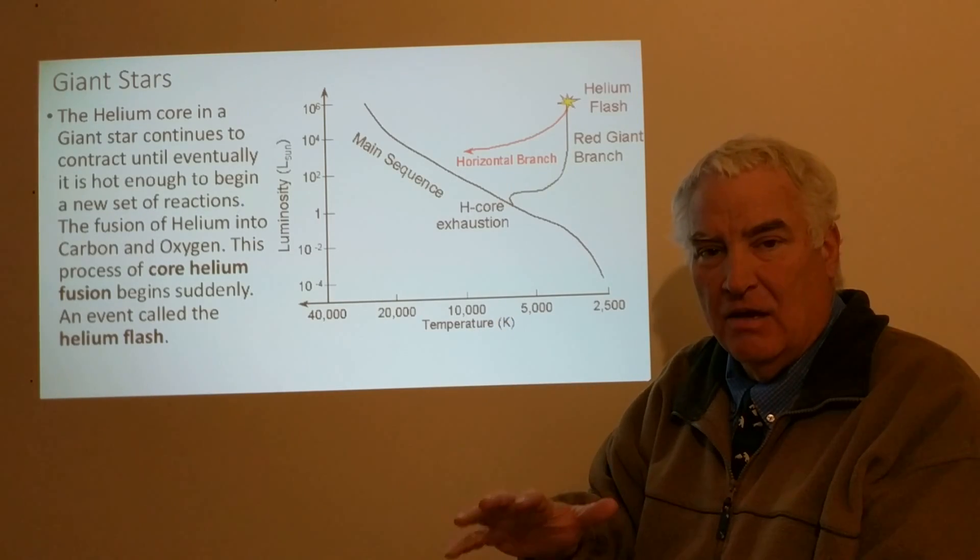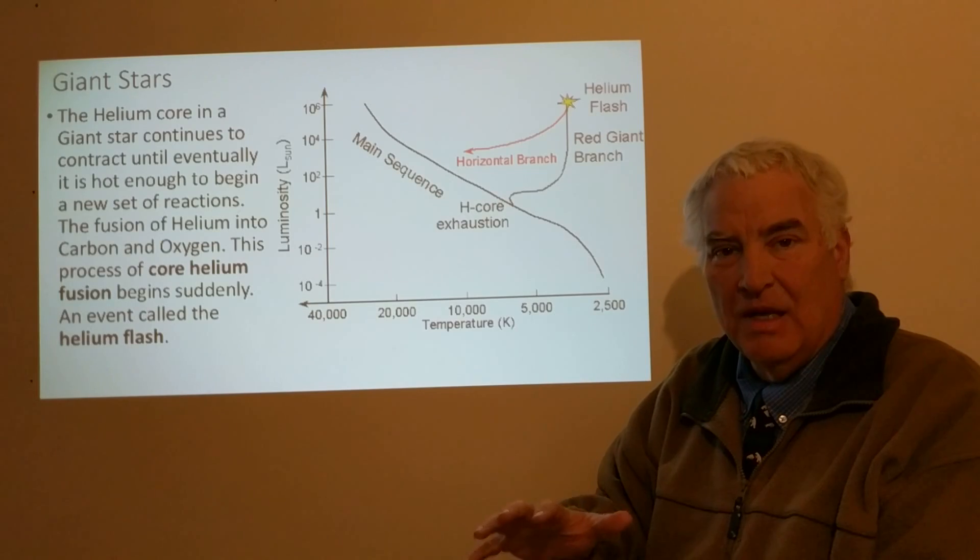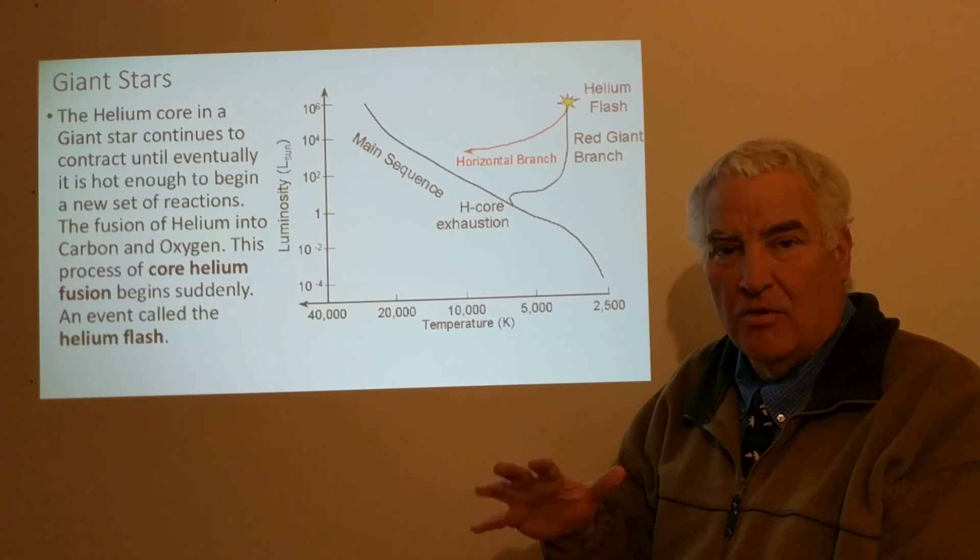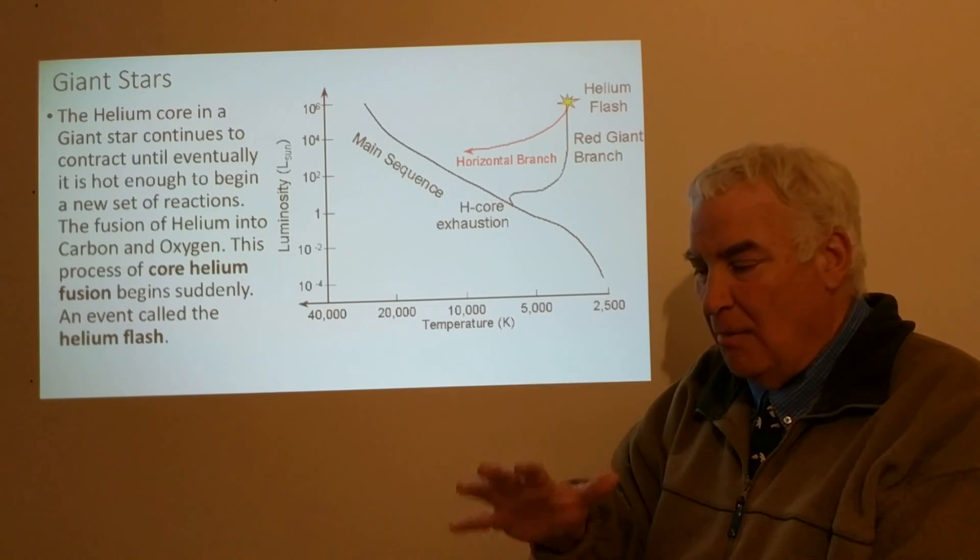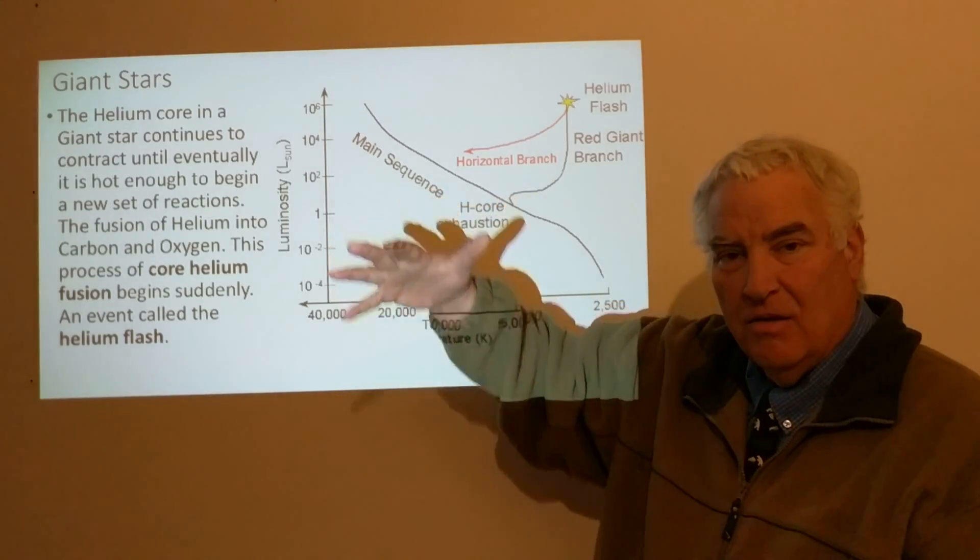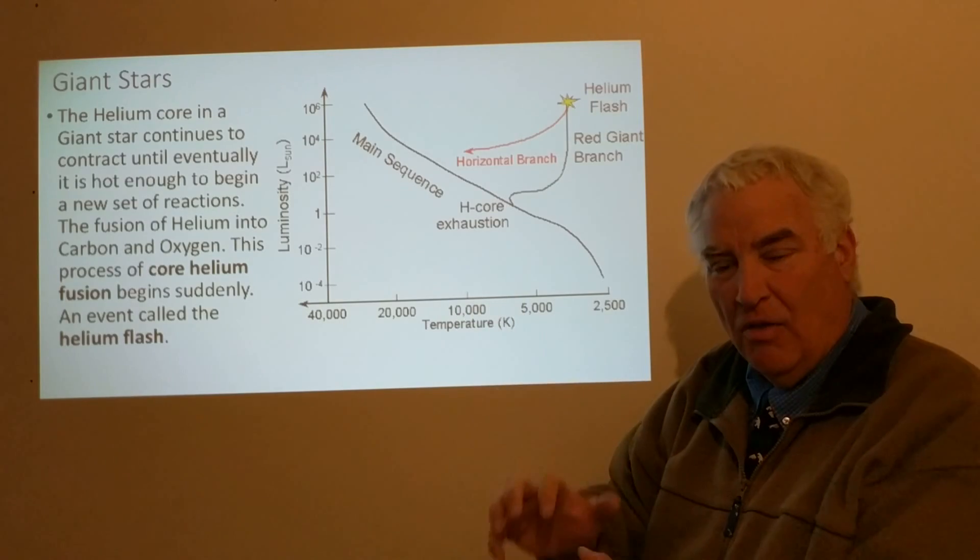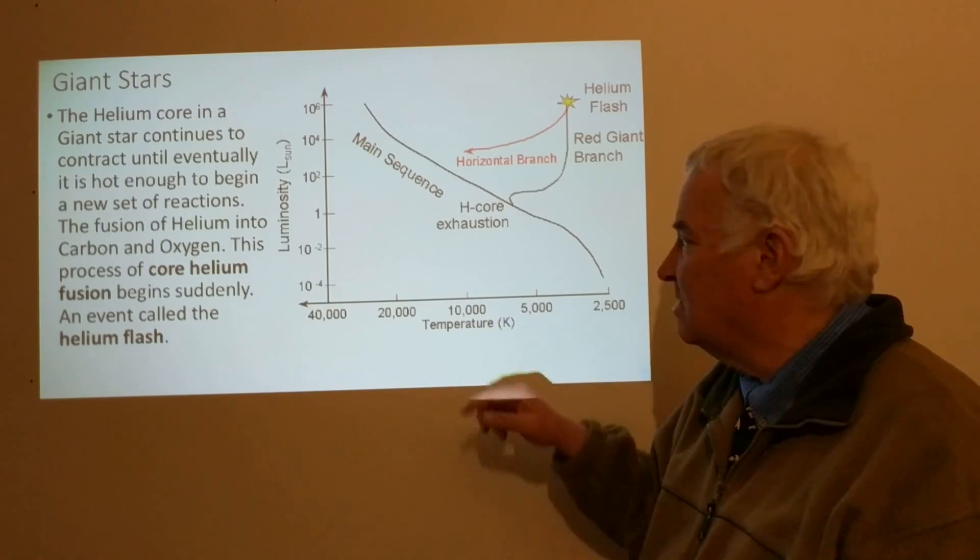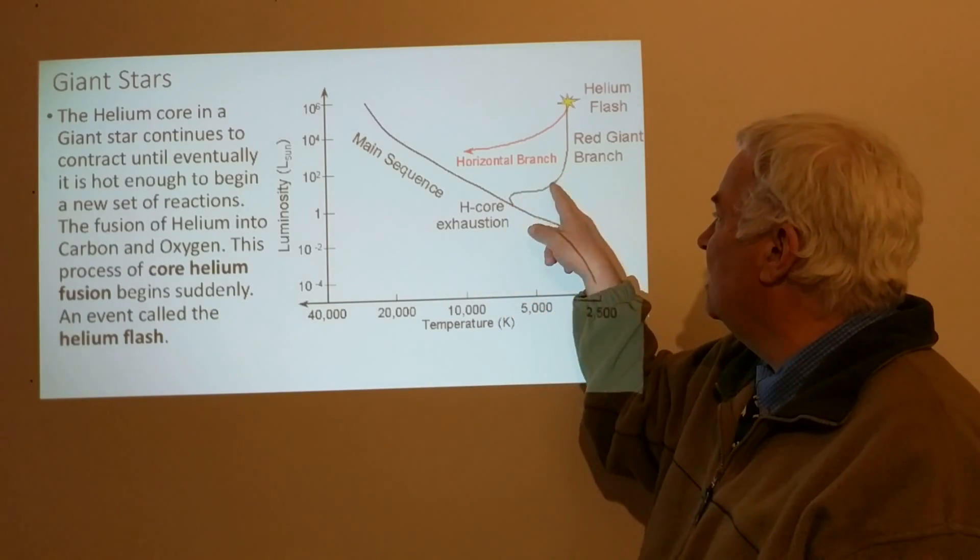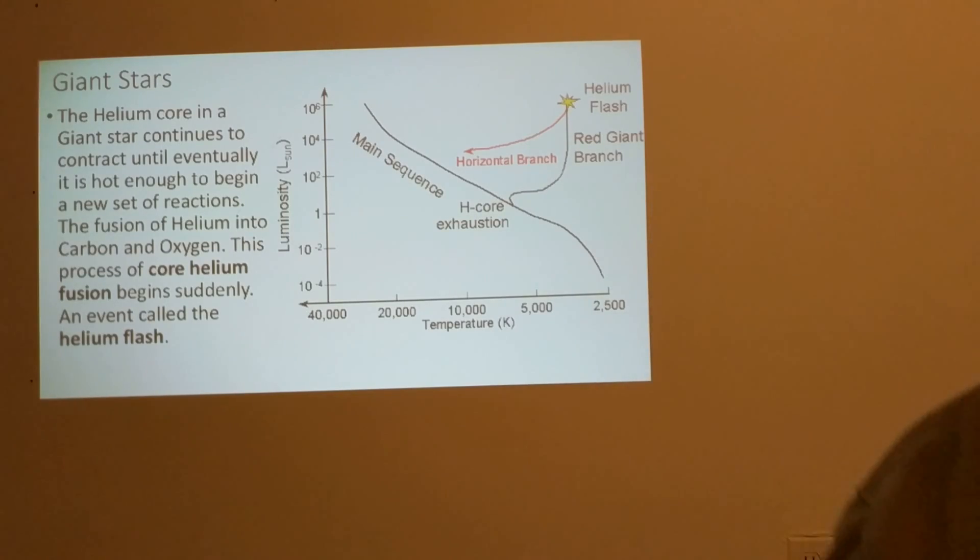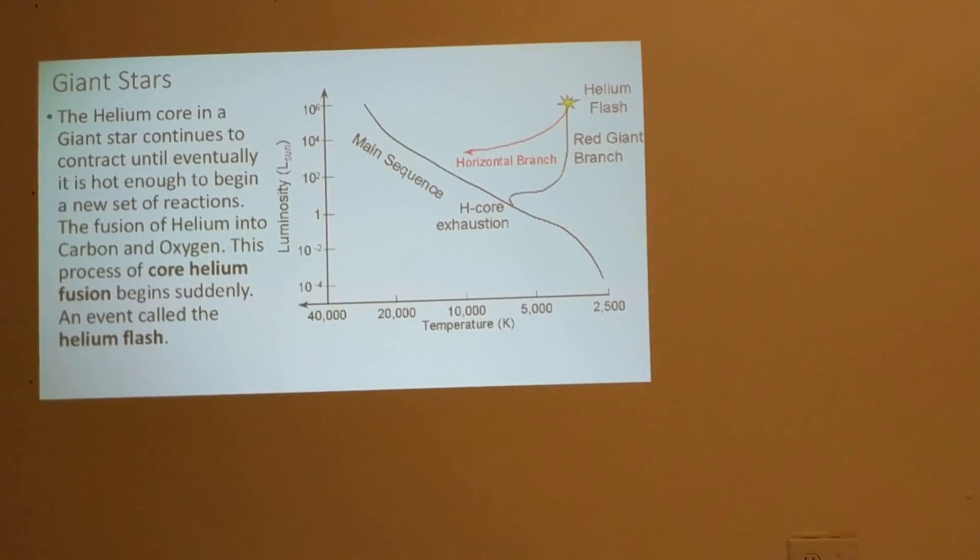The core fuses helium into carbon, and some oxygen is also formed. The outside of the star, the majority of the star, expands while the core contracts. Core contracts and heats up, star expands and cools down. So we see the star is red yet the core is contracting and heating up to many millions of degrees when the helium flash occurs.